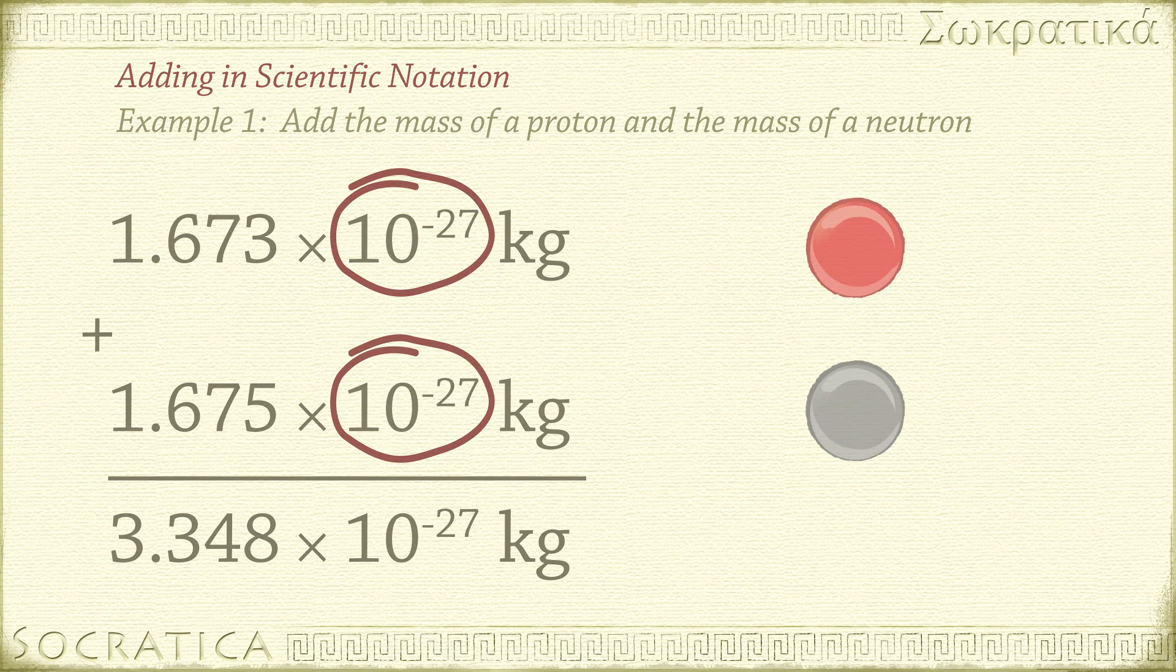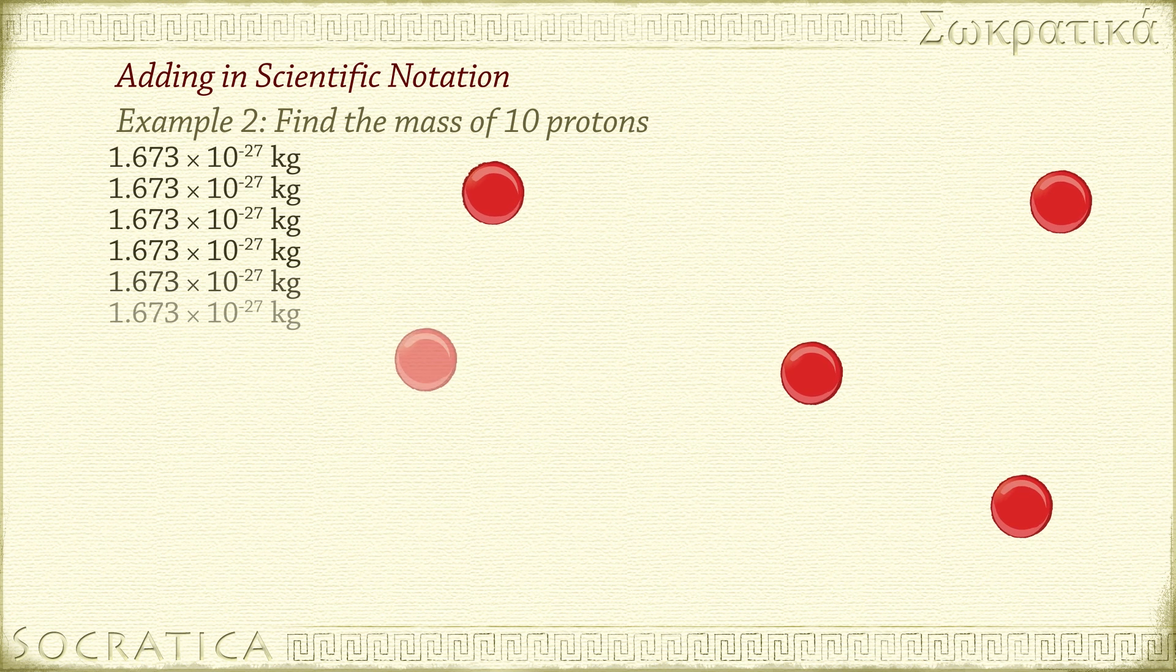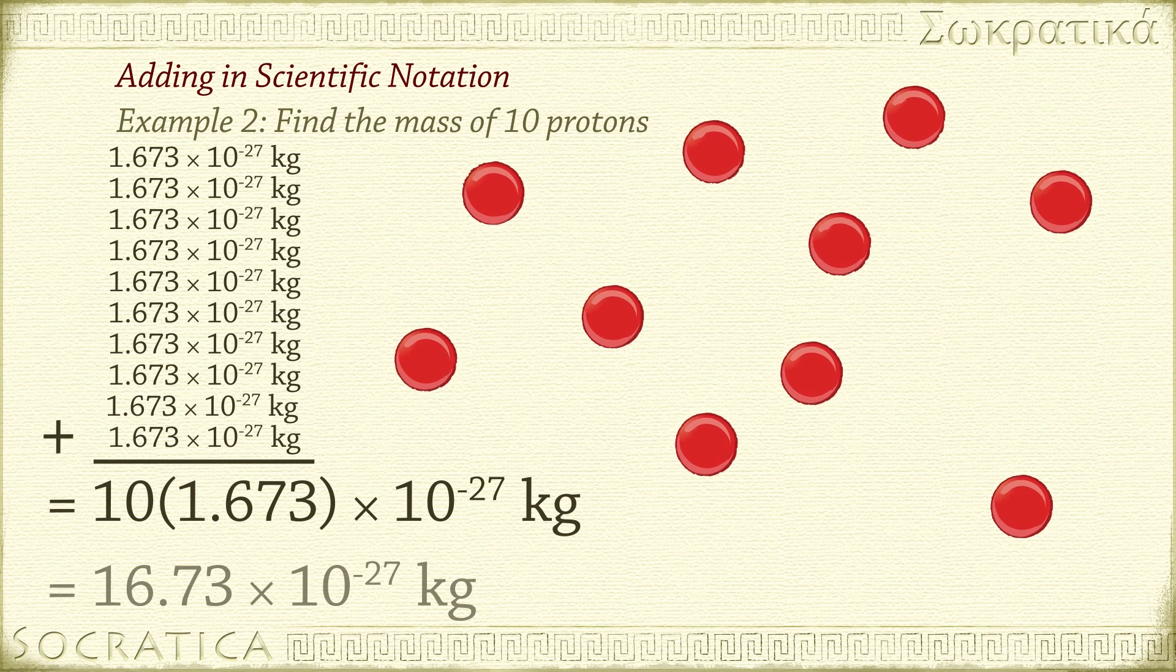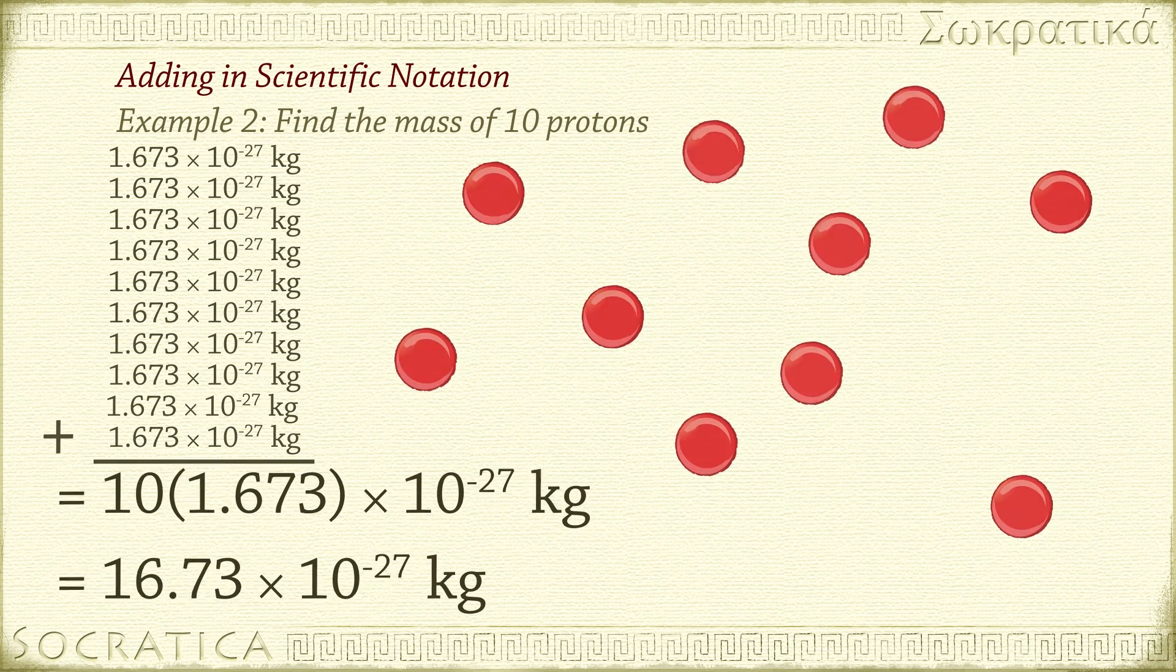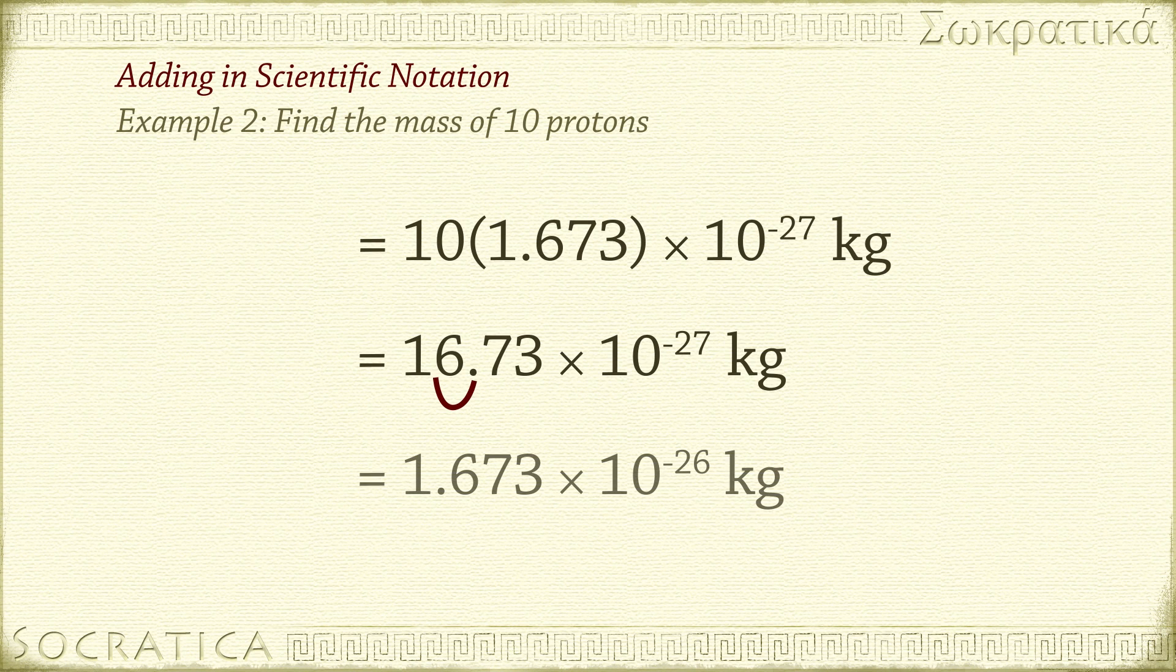Let's look at an example where the exponent would change. Find the mass of 10 protons. We can add 1.673 times 10 to the negative 27 ten times. That's the same as multiplying the coefficient by 10. We get 16.73 times 10 to the negative 27. We'll move the decimal point one step to the left, and then we can rewrite this as 1.673 times 10 to the negative 26.